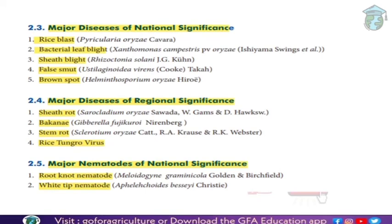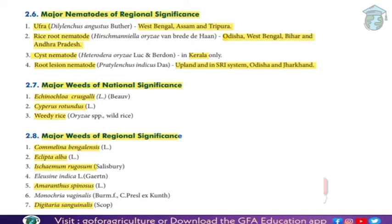Major diseases of national significance include rice blast, bacterial leaf blight, sheath blight, false smut, and brown spot. Major diseases of regional significance include sheath rot, Bakanae, stem rot, and rice tungro virus. For major nematodes of national significance, there are root-knot nematode and white-tip nematode. Major nematodes of regional significance include Ufra, found in West Bengal, Assam, and Tripura.